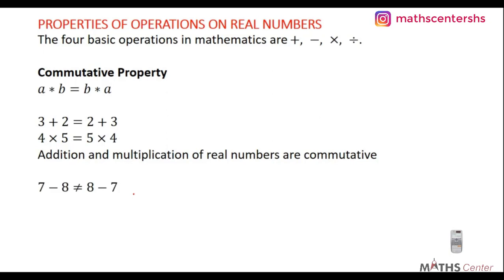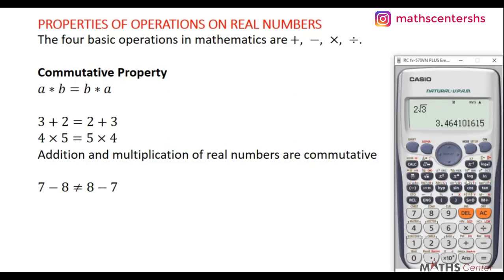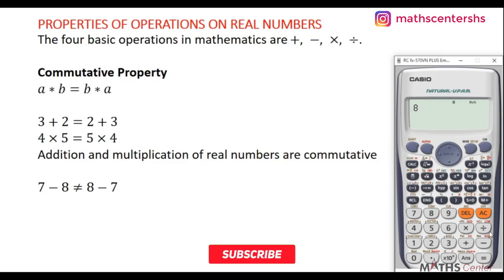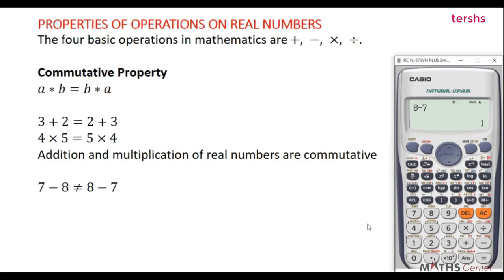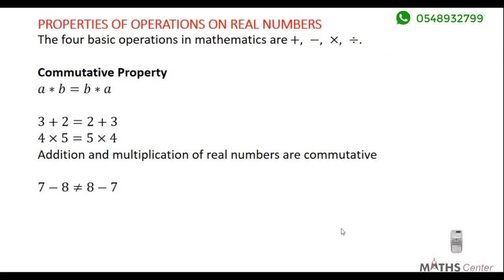For subtraction, 7 − 8 = −1 but 8 − 7 = 1. Since −1 ≠ 1, subtraction is not commutative.